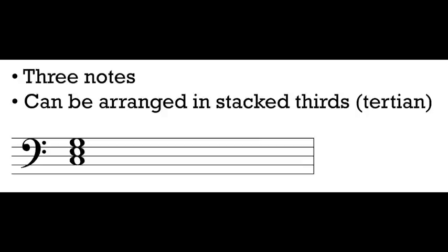A triad is a chord, a particular type of chord that we see a lot in music, and there are a couple of special things that make a triad a triad. The first thing is that a triad is made up of three different notes. We can have chords with four notes, five notes, six notes, seven notes, all sorts of different combinations, but for a chord to be a triad there has to be three notes. The other quality of a triad is that its pitches can be arranged in stacked thirds. We can see that we've got a triad written right here and we know it's a triad because we can stack up the notes in thirds.